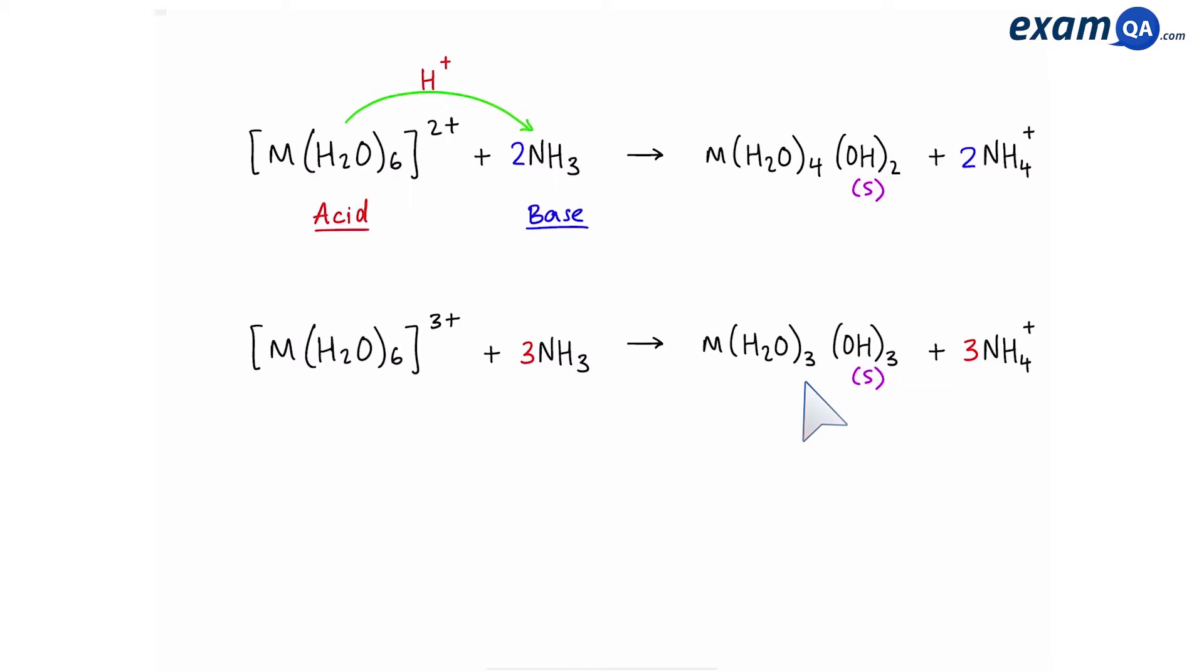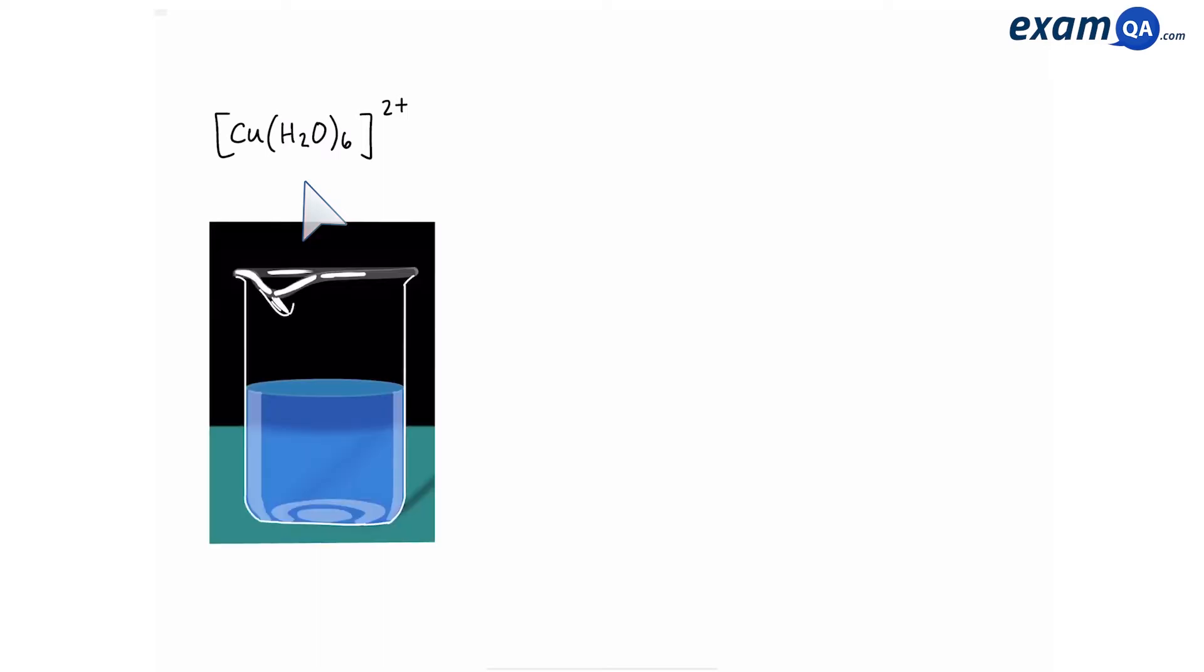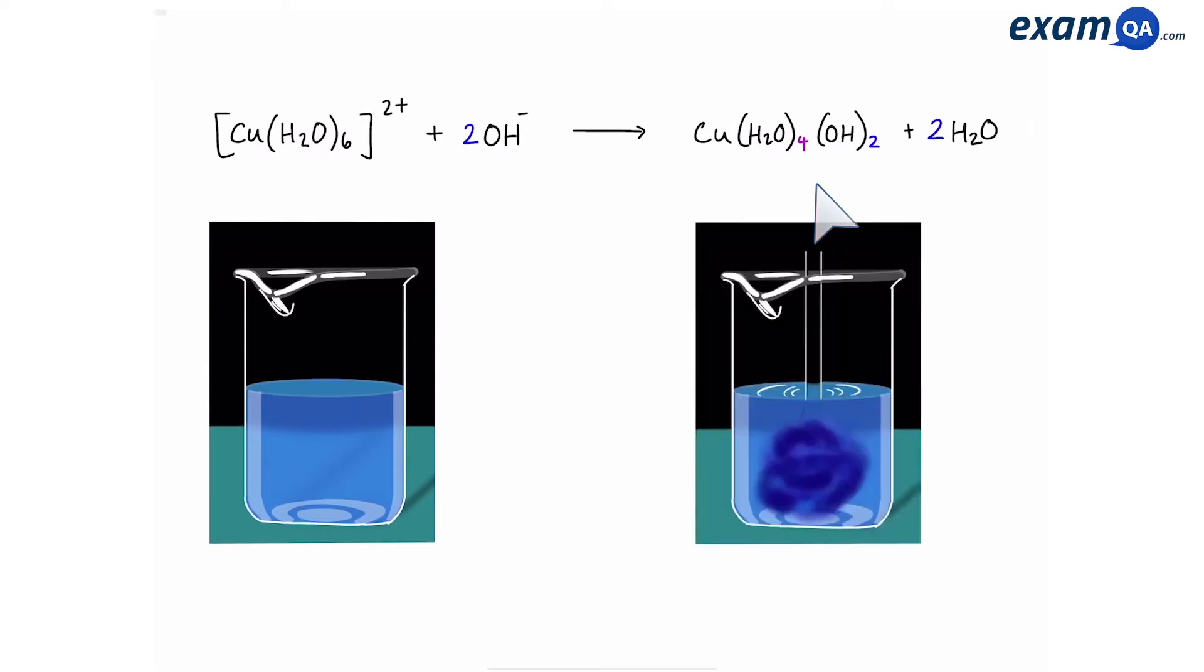Now we're going to look at some example colors that we have to know. Here we have a hexa-aqua ion of copper 2+. This is a pale blue solution. When you react it with hydroxide ions, you get the following compound and two water molecules. We can see the copper product is uncharged, and this will form a precipitate. In the case of copper, we're going to form a dark blue precipitate.